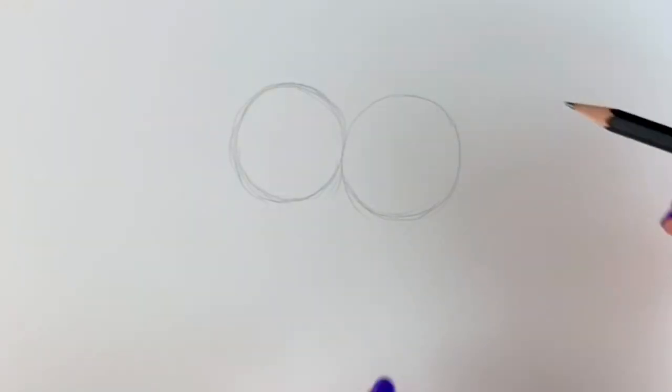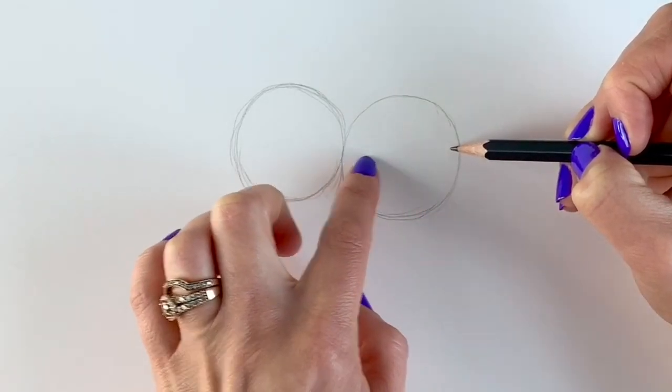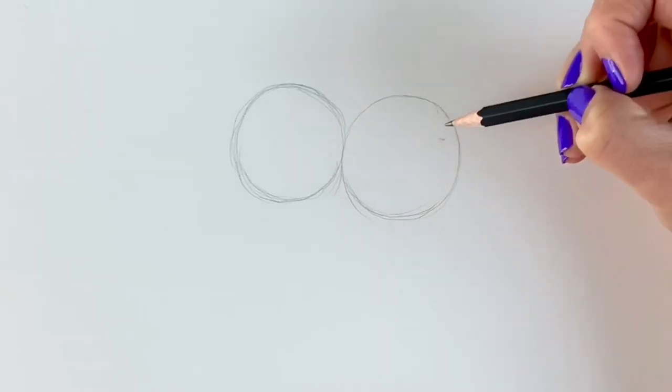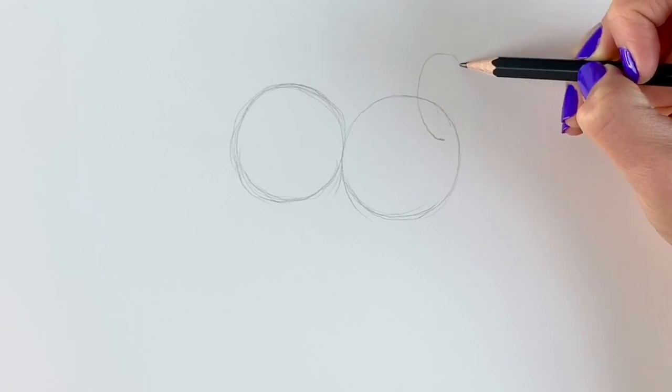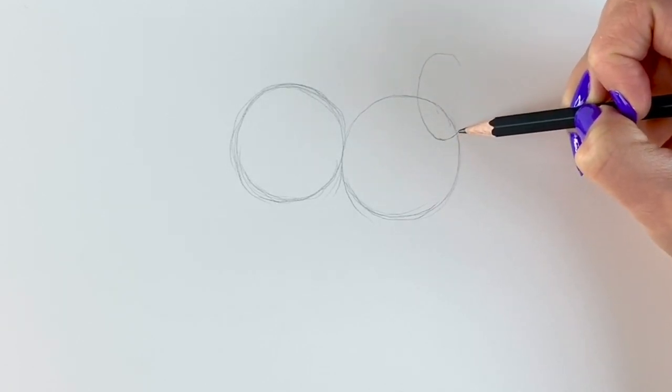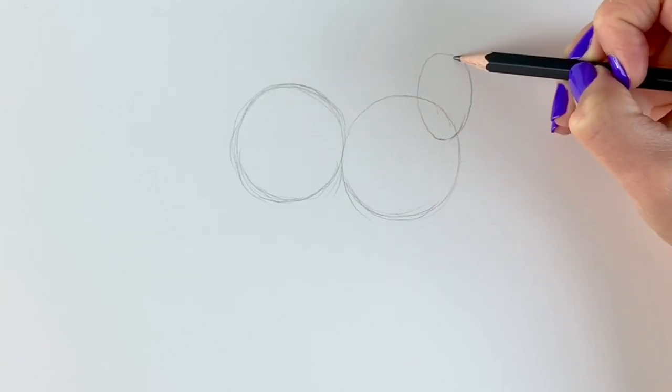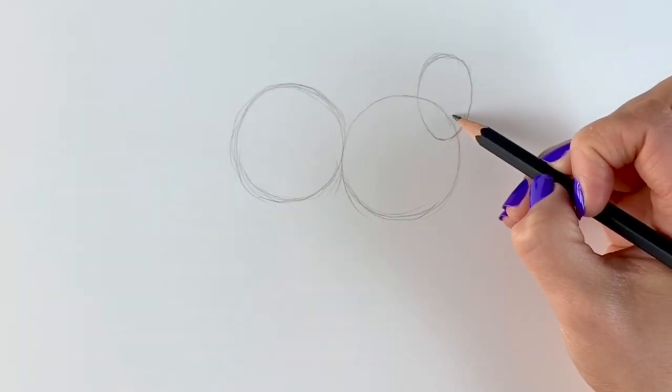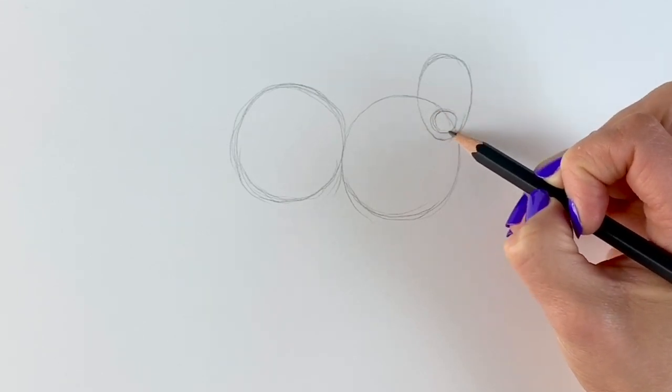Now we're going to be drawing an oval shape. That's going to be the head. It's going to go just here. So starting, if you can imagine halfway on this circle, just go up a little bit and that's where the bottom of the head is going to be. So just an oval shape just like this. Comes around just like so. Something like that. Now we're going to be drawing a circle for the muzzle area. So just one. Just there.